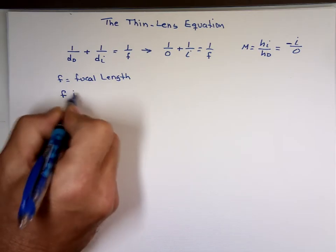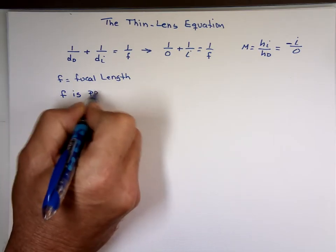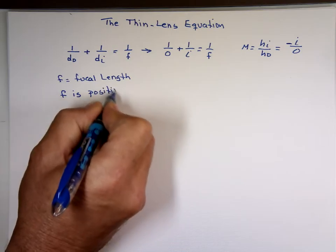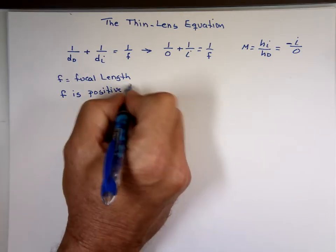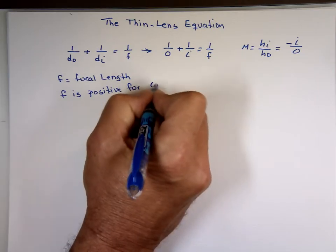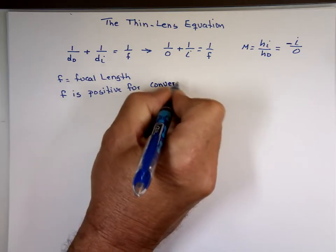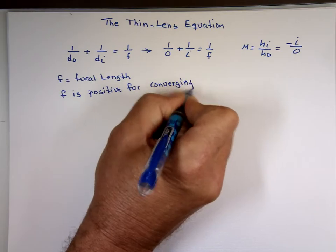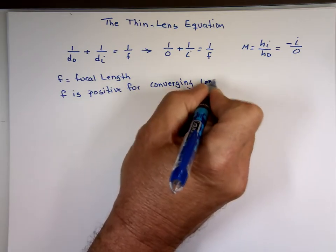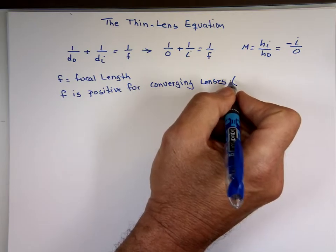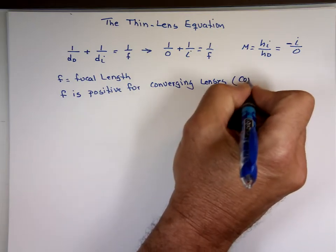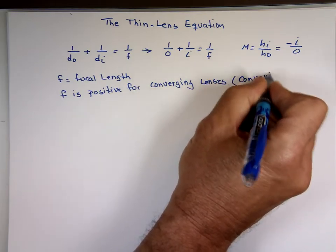F is positive for converging lenses. A lot of times, instead of the word converging, they use convex. The word convex means converging lens.